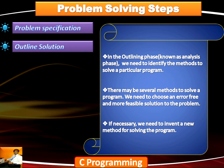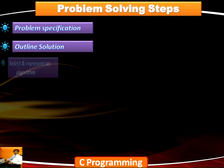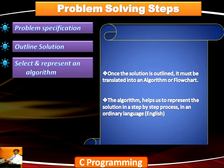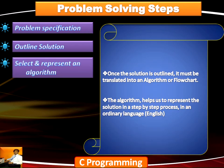Once we are done outlining the solutions, we need to pick a good solution and represent it as an algorithm or flowchart. An algorithm helps us represent a solution to a particular problem in a step-by-step process in ordinary English language integrated with certain programming elements. A flowchart provides a pictorial representation of the solution. This algorithm is the basic layout or design of the entire problem solving.